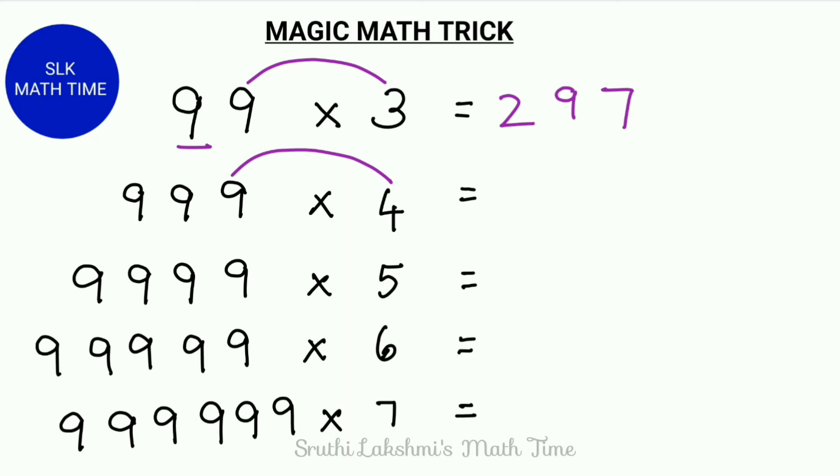So we first do 9 into 4 which is 36. We write it with a little gap in between. How many 9's are there before this 9? There is 2 9's. So we write 2 9's in the middle.